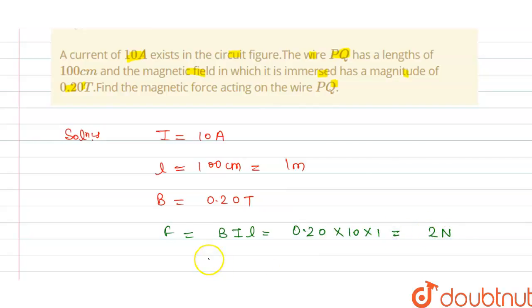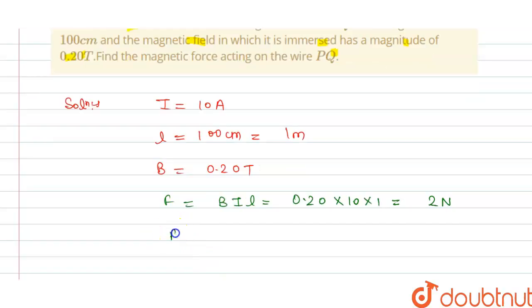So this is the force here. We know that force is I into l cross B, so from this we can write this equals 2 newton. This is the answer for the question.